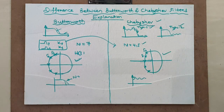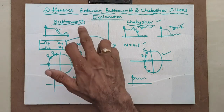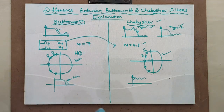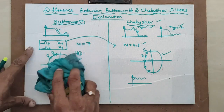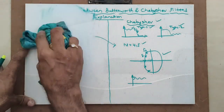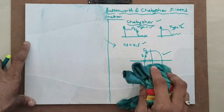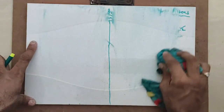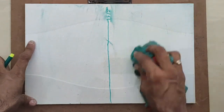I hope you understood these differences. This is important — sometimes exam questions ask you to write four or five differences between Butterworth and Chebyshev filters. Now let us go ahead with the second topic: the difference between analog and digital filters.